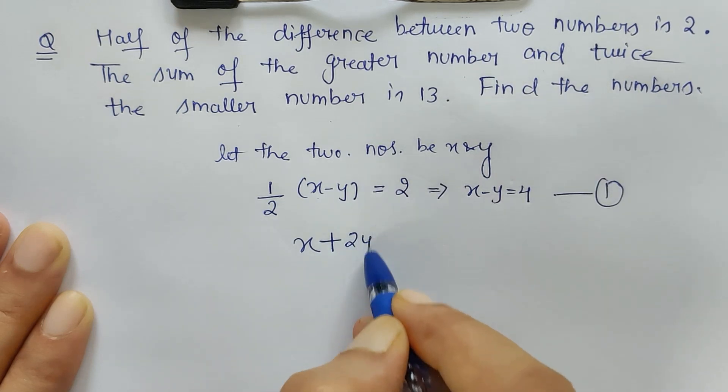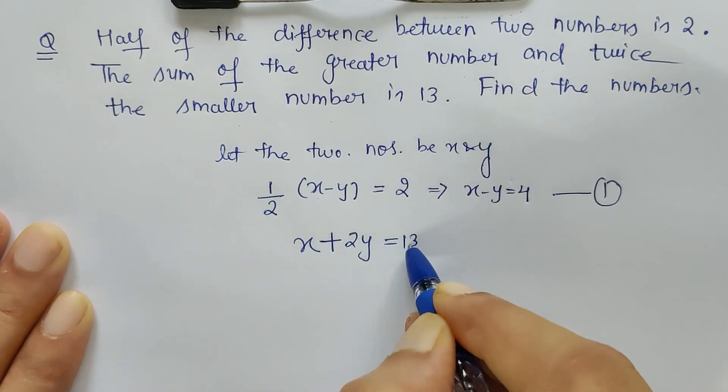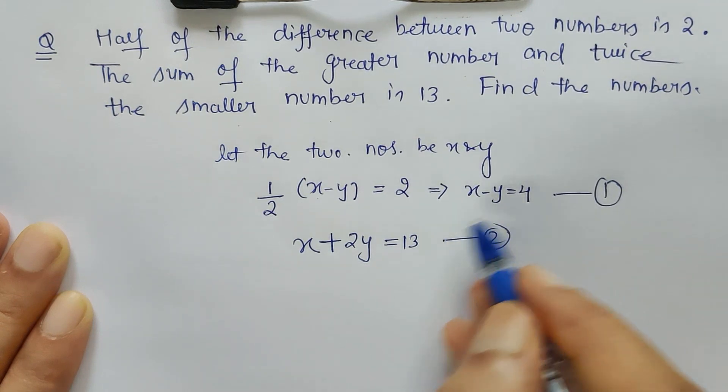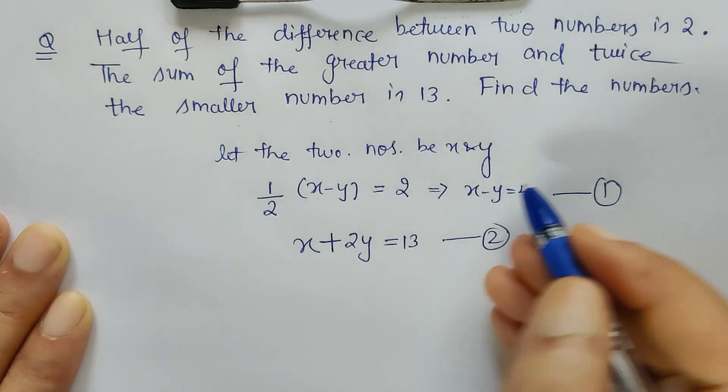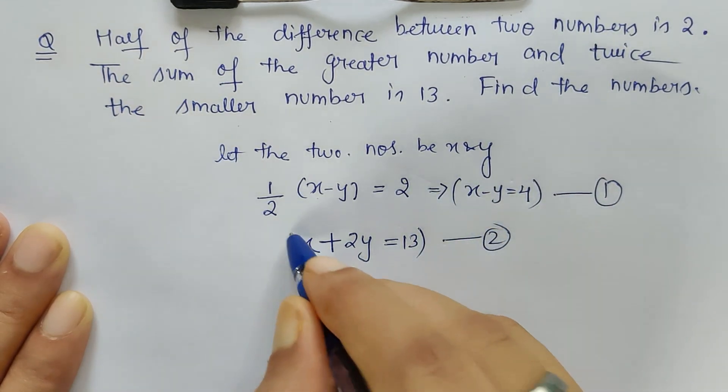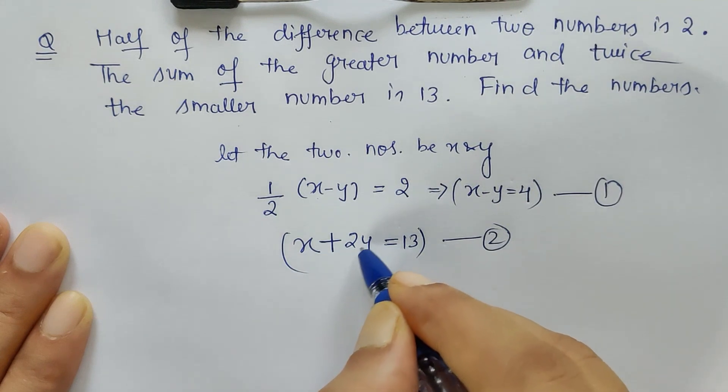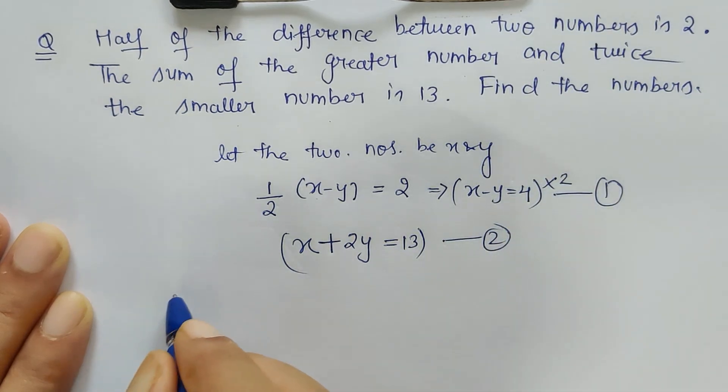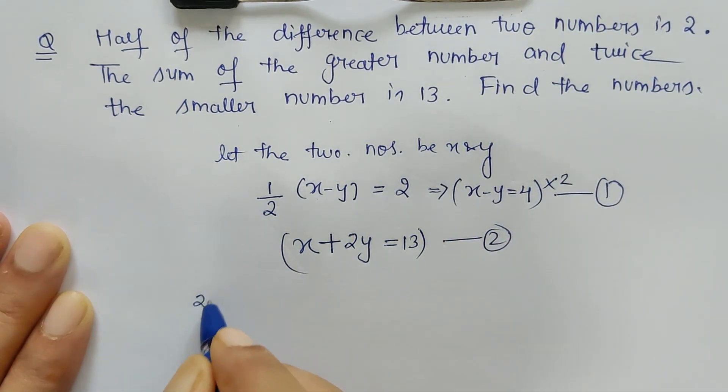The sum of the greater number and twice the smaller number—the smaller number we have considered y—twice that smaller number is 13. So this is my second equation. Now using elimination method we can easily get the values of x and y. So what am I going to do here is I'll take the coefficient of y which is 2 and multiply equation 1 throughout.